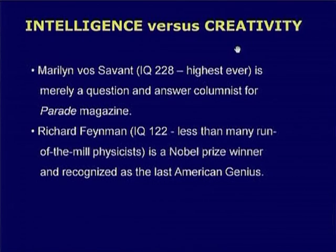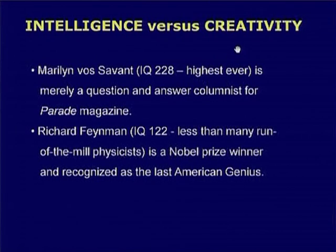One person is Marilyn Vos Savant, who got a score of 228 — regarded as the highest ever on that particular intelligence test. Another person is Richard Feynman, a well-known physicist. This physicist received only a score of 122, which is less than many run-of-the-mill physicists. Many other physicists received the same score but were not as well known as Richard Feynman. If you go by these scores, then Richard Feynman is a less intelligent person than Marilyn Vos Savant.